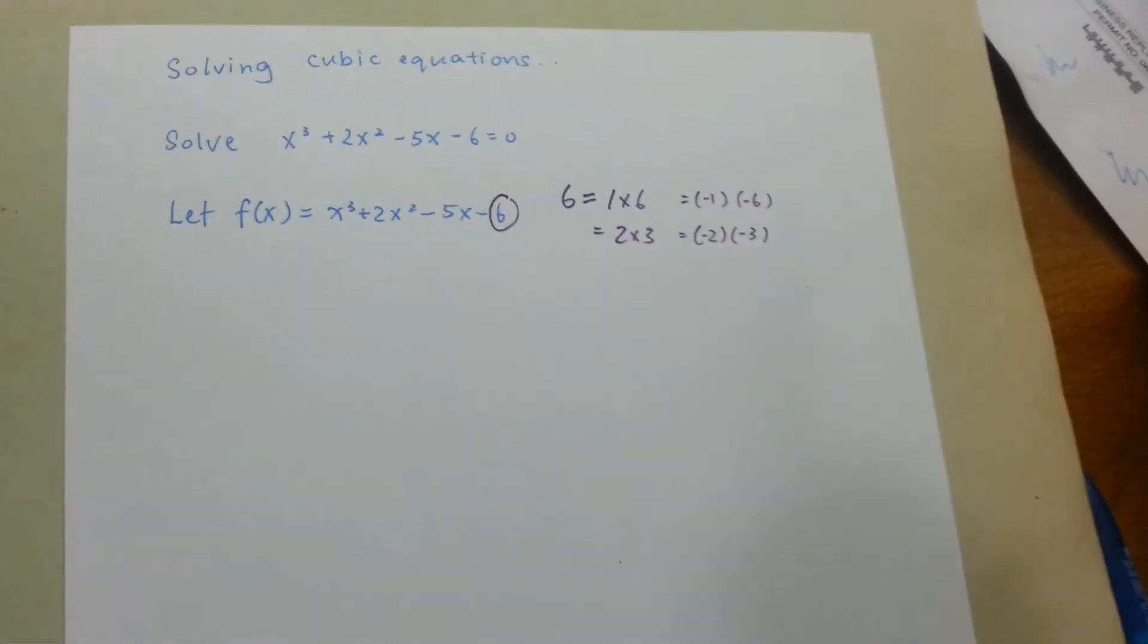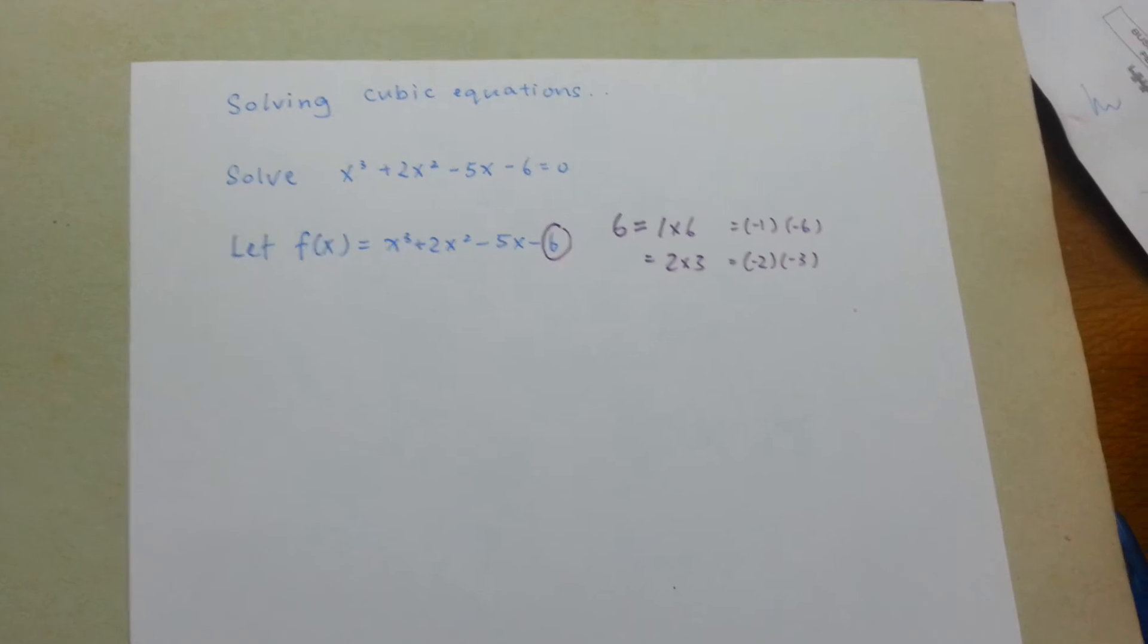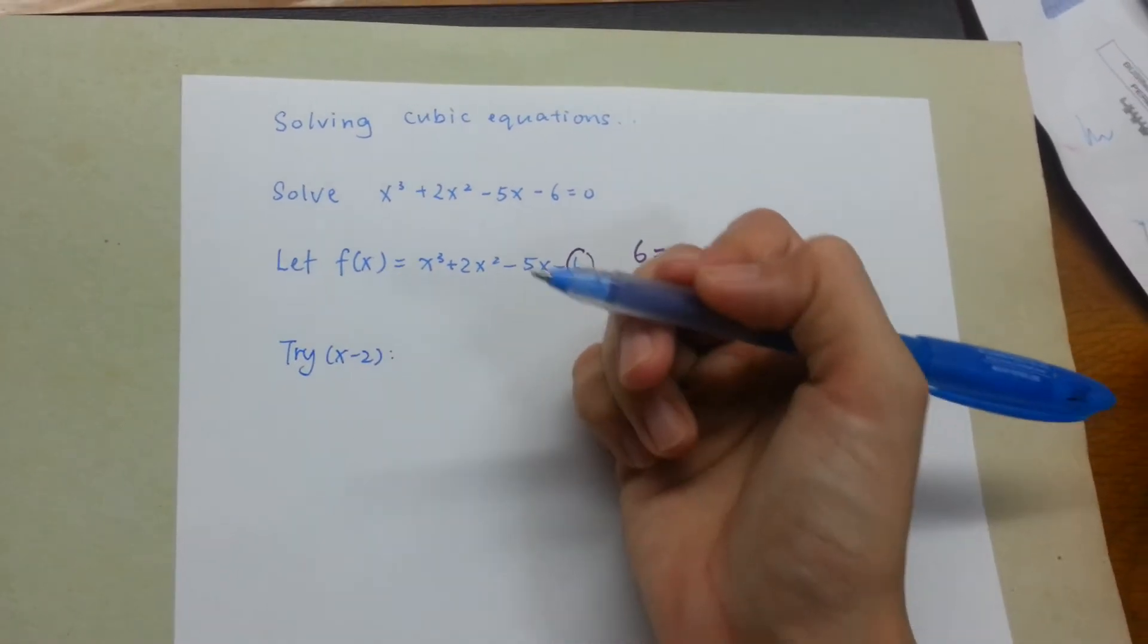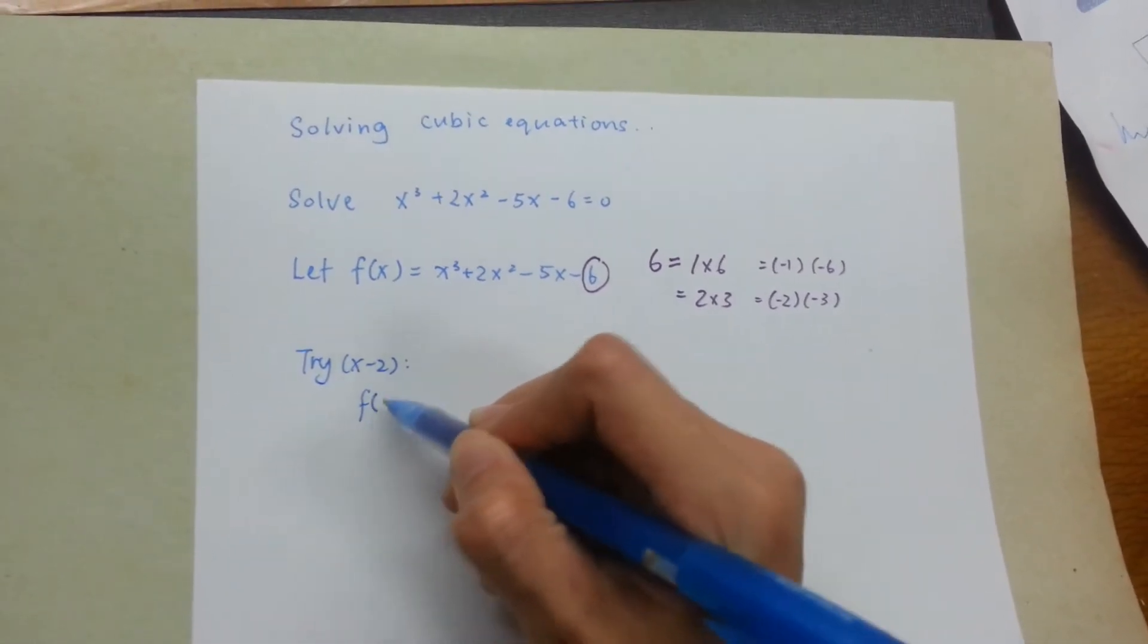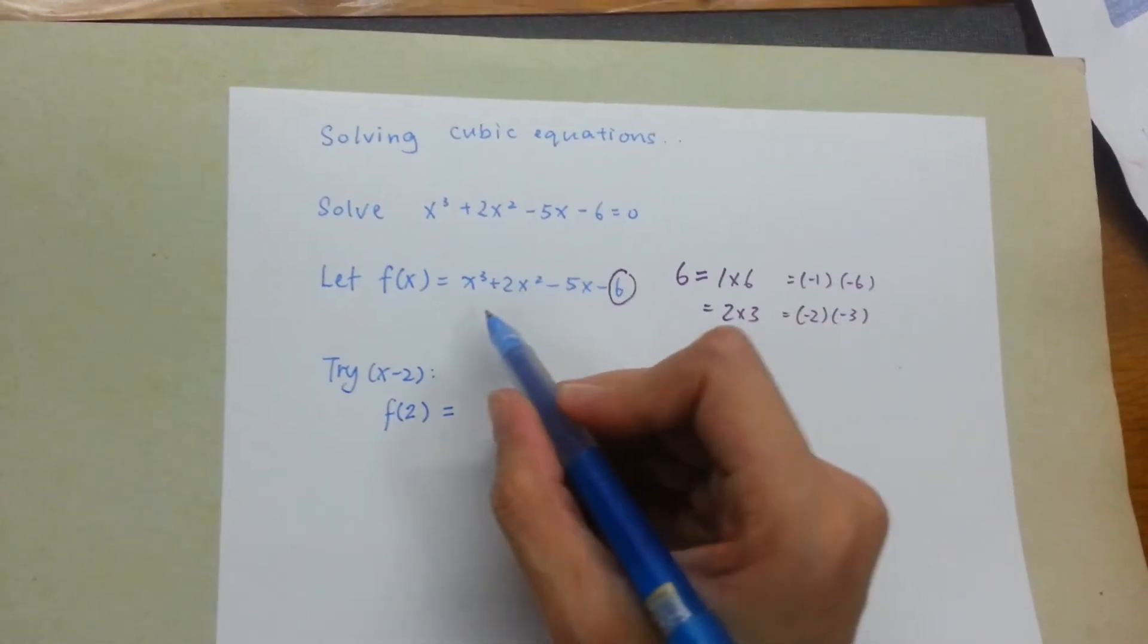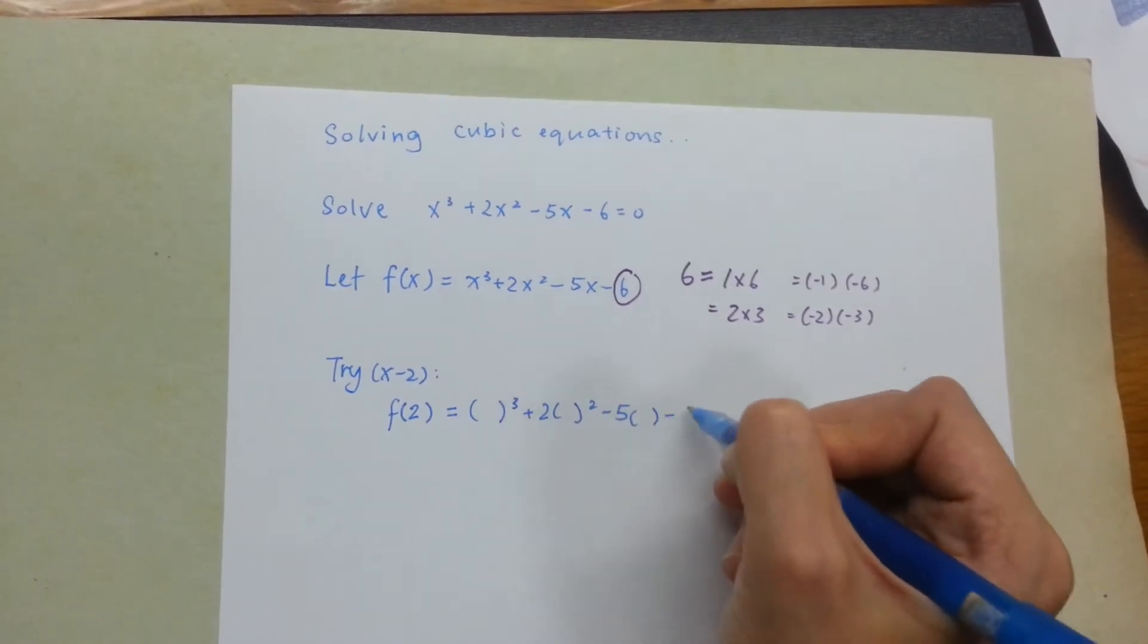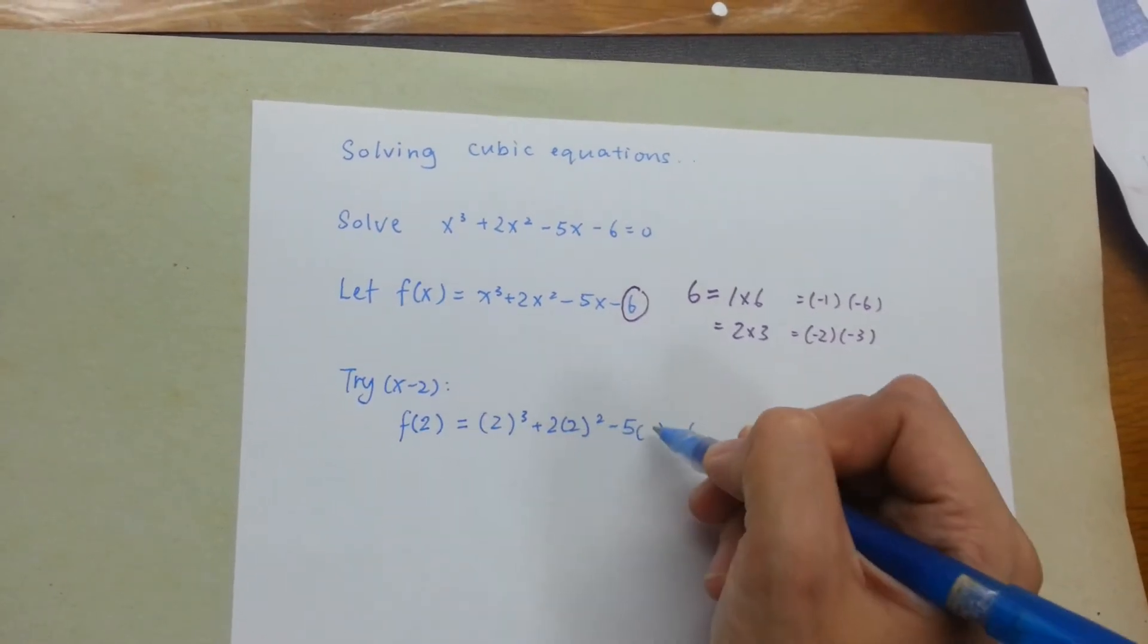So, we're going to try to divide by one of these factors here. I'm going to try x-2 as the divisor. If I choose x-2, I've got to substitute 2 as my x value. So I'm going to write my substitution: x³ + 2x² - 5x - 6, and my x value is now 2.